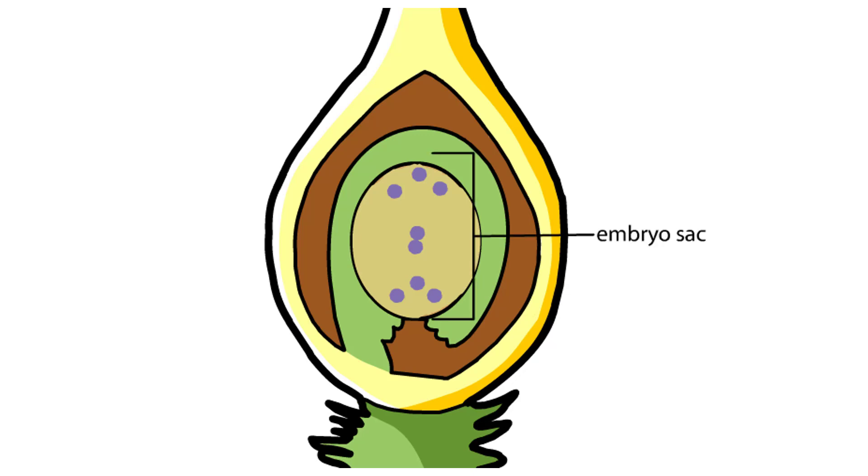Within the embryo sac, cell walls form between most of the nuclei. Three cells called antipodal cells form opposite the micropyle opening of the ovule.